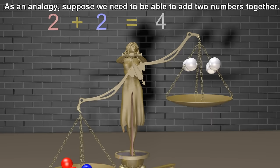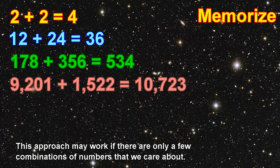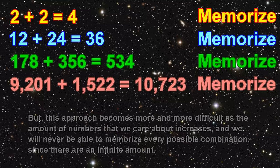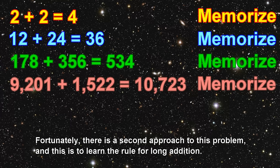As an analogy, suppose we need to be able to add two numbers together. One approach is to try to memorize the sum of every possible combination of numbers that we will ever wish to add. This approach may work if there are only a few combinations, but becomes more and more difficult as the amount of numbers increases, and we will never be able to memorize every possible combination since there are an infinite amount.